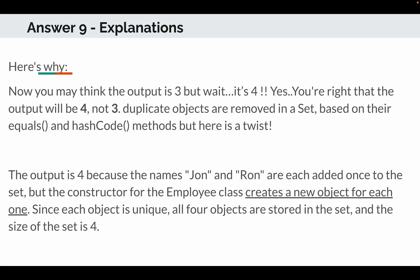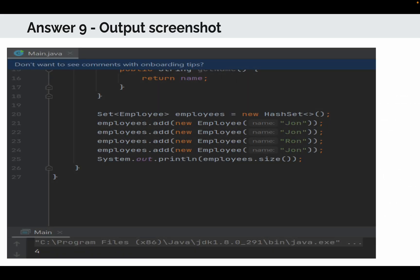Duplicate objects are removed from a Set based on the equals and hashCode methods, but here is the twist: the output is four because the Employee class does not override equals and hashCode. The constructor creates a new object for each instance, so each object is unique, and all four are stored in the Set. I also ran this code in IntelliJ and confirmed it printed four.